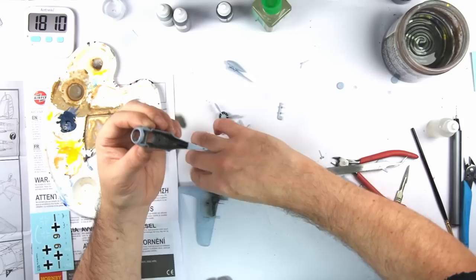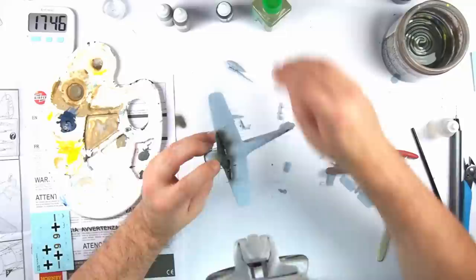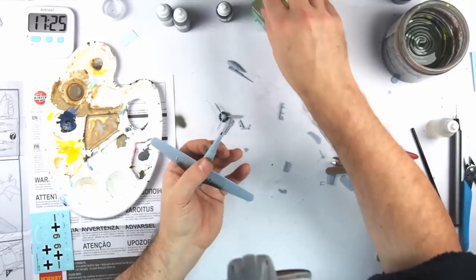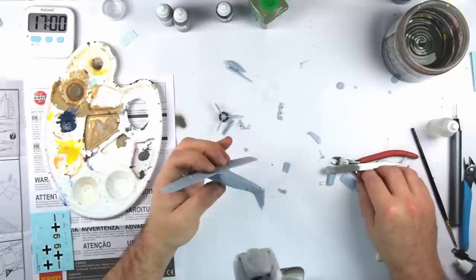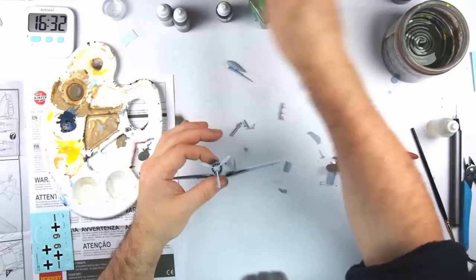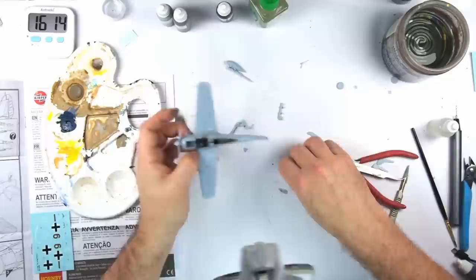The rudder went on next, and then the main wing assembly. Time seemed to be accelerating away as I was rapidly approaching the three-quarters mark. Attaching the wings also knocked the rudder off, but I just left that for later.